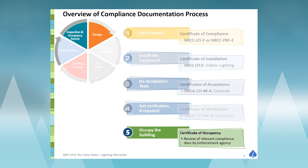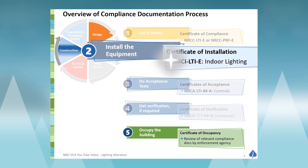At the end of the day, we want to get the Certificate of Occupancy. By making sure all the compliance forms are made available on-site for the building inspector, the project will go through the final process better. The only forms that need to be collected by the local authority having jurisdiction is the Certificate of Compliance forms. All other forms are to be made available on-site and then provided to the building owner.